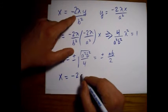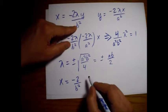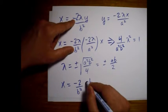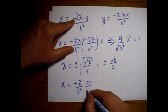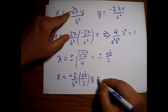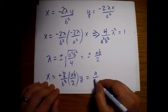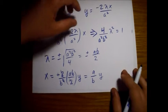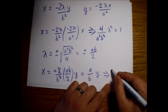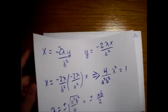Looking at x: x = −(2/b²)·λ·y. Taking the negative value of λ to cancel the minus sign, the two factors of 2 and one factor of b cancel, leaving x = (a/b)·y. This means bx = ay.